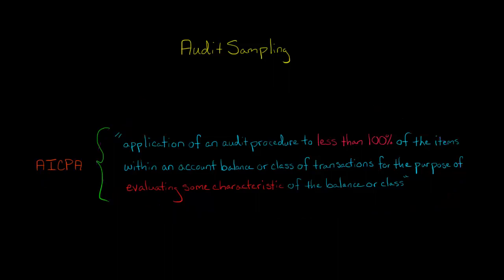You'll notice that we're looking at an account balance or a class of transactions. So an account balance could be something like the inventory balance, the accounts receivable balance, a class of transactions could be like a list of purchases. We're going to look at less than 100% of that account balance or class of transactions.